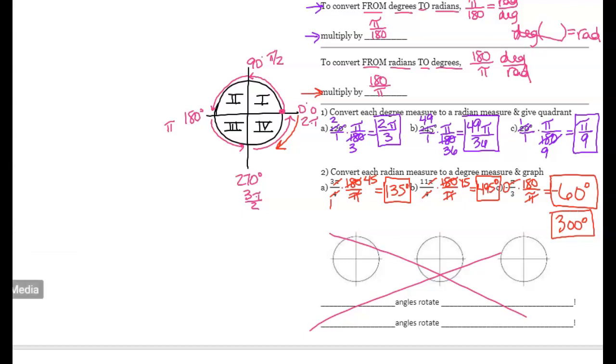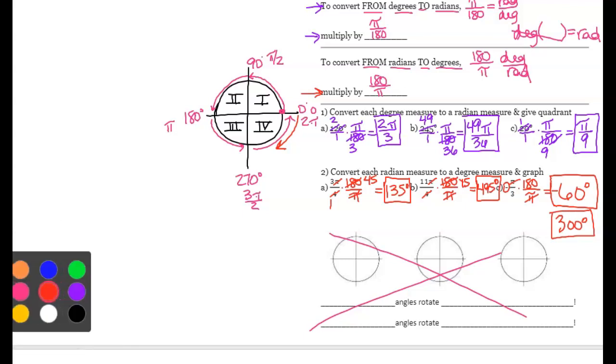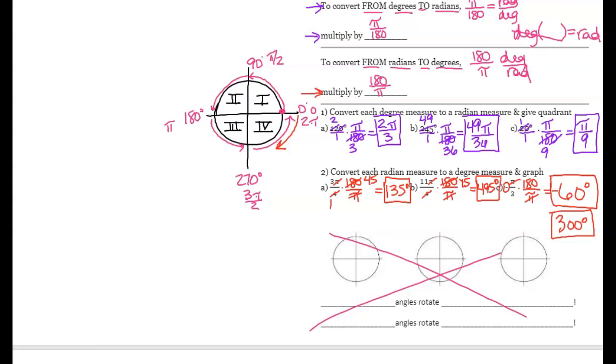So this is just an example of how to convert radians to degrees and vice versa, and an introduction to radians in the unit circle.